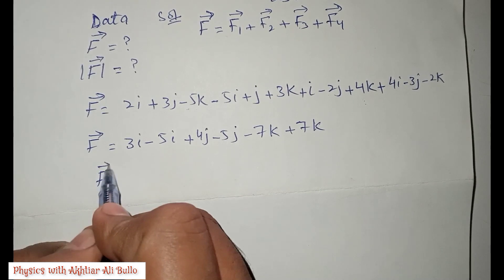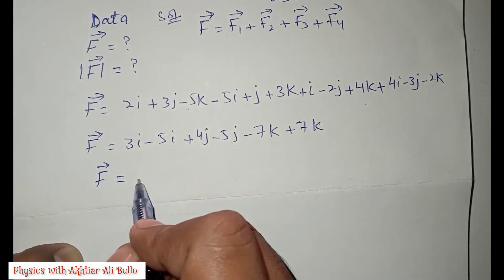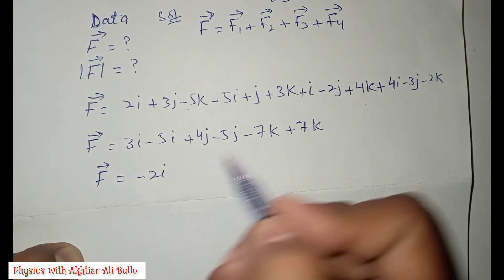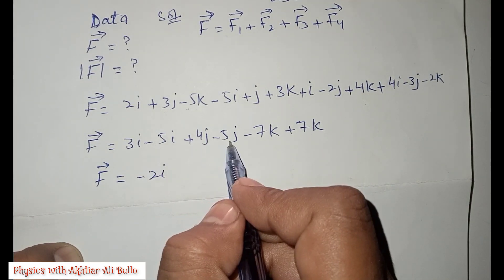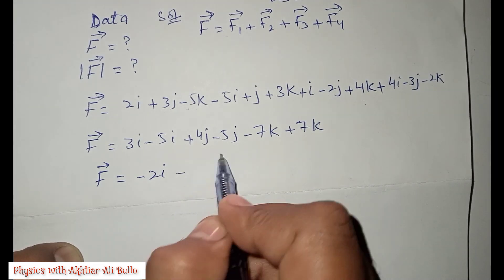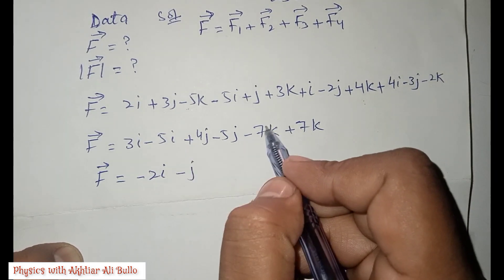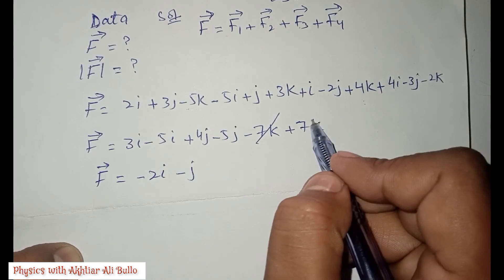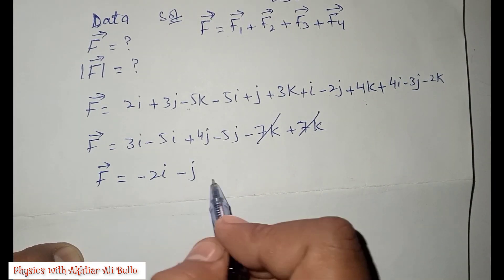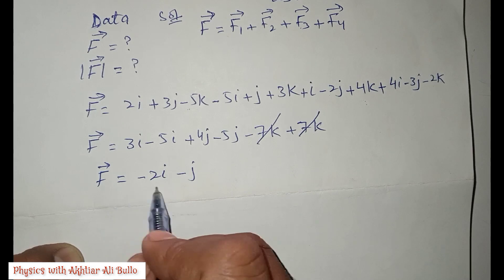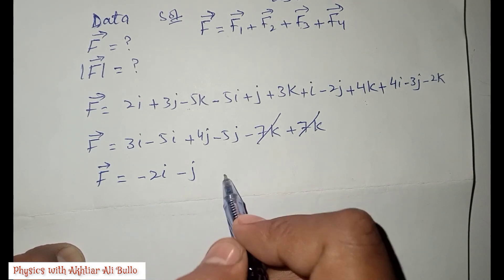So the resultant force: +3i − 5i gives −2i, and +4j − 5j gives −j, and −7k cancels with +7k. Therefore the resultant is: F = −2i − j Newtons.